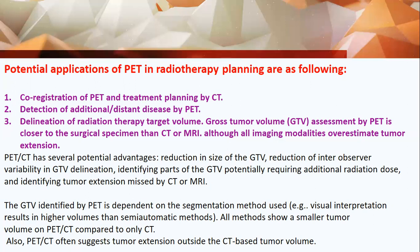PET-CT has several potential advantages: reduction in the size of the GTV, reduction in inter-observer variability in GTV delineation, identifying parts of the GTV potentially requiring additional radiation dose, and identifying tumor extension missed by CT or MRI. The gross tumor volume identified by PET is dependent on the segmentation method used, especially visual interpretation, which results in a higher volume than semi-automatic methods.